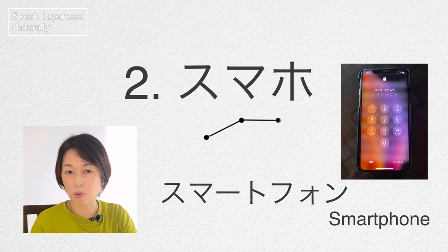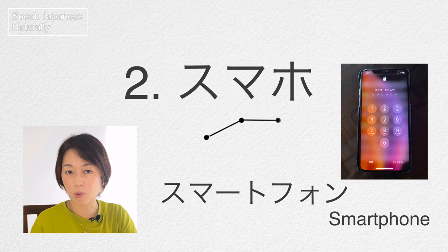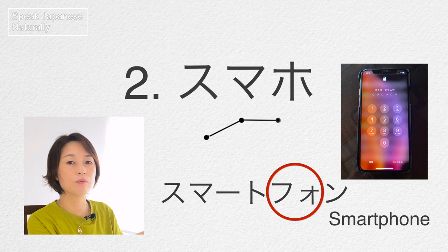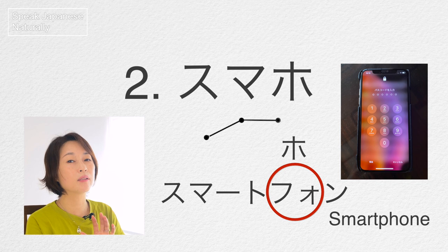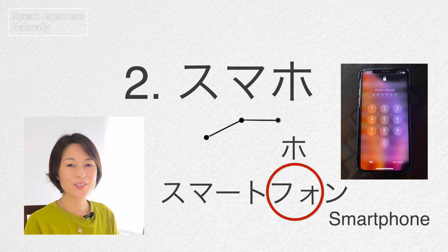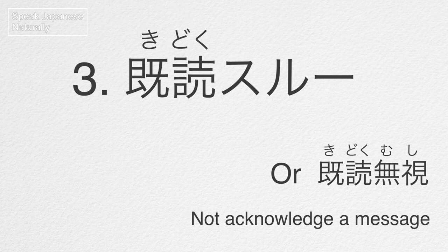スマホ is the abbreviation of smartphone. This is written as 'smartphone' but many people say smartphone, and 'fo' is much easier to say than 'fo', so usually we say 'sma-fo' — smartphone. This is sma-ho, sma-ho.